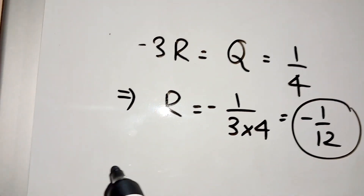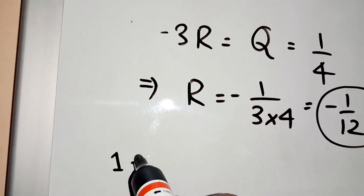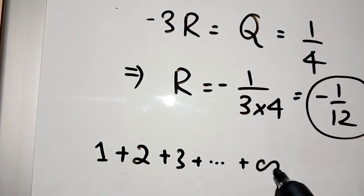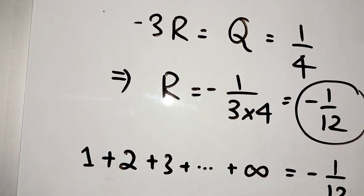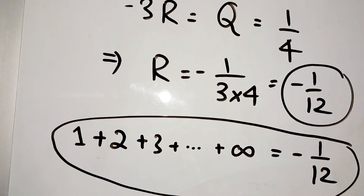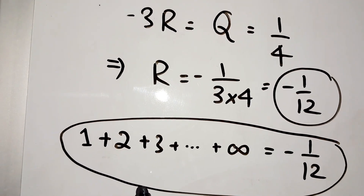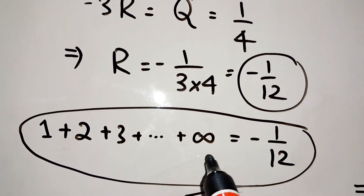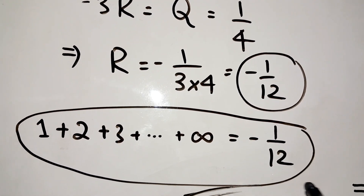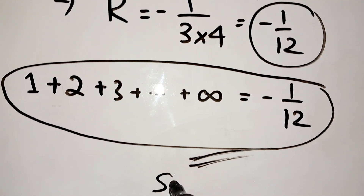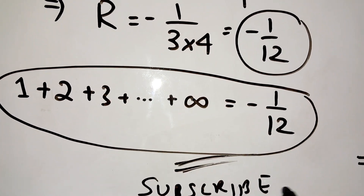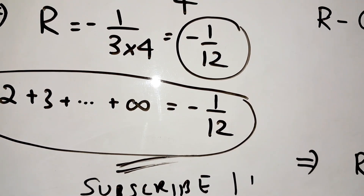And what is 1 plus 2 plus 3 up to infinity? That is R, which equals minus 1 by 12. And this is just proved — Ramanujan's identity. We got 1 plus 2 plus 3 up to infinity equals minus 1 by 12. Thank you.